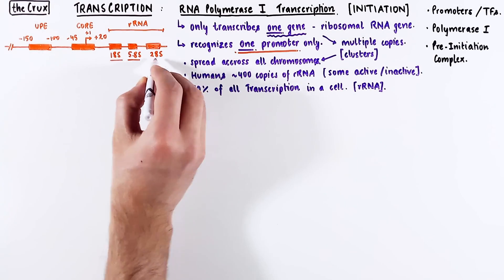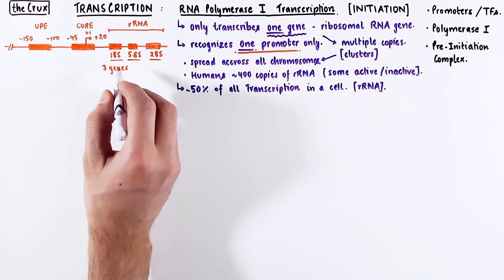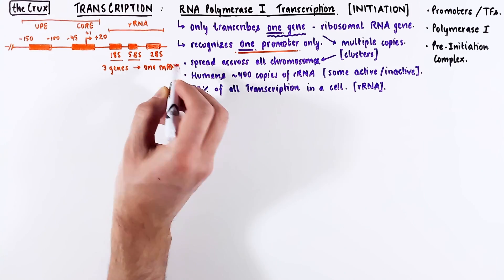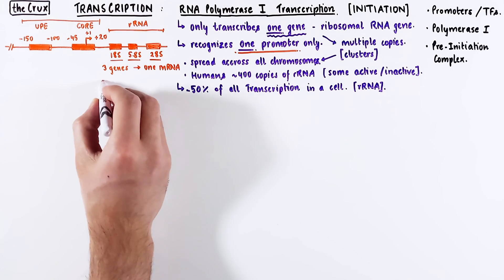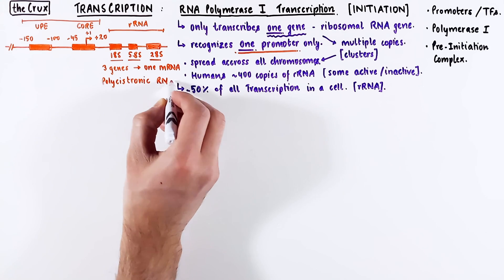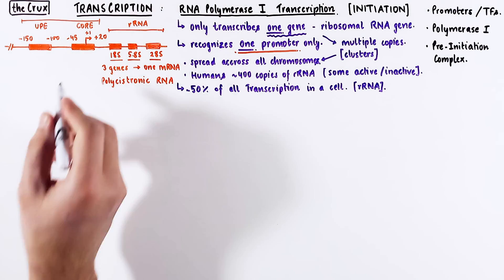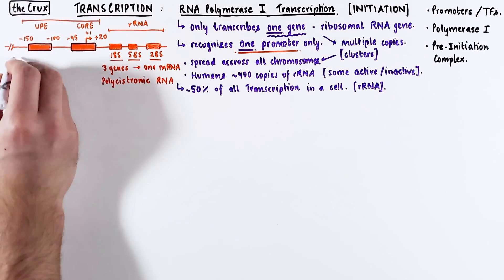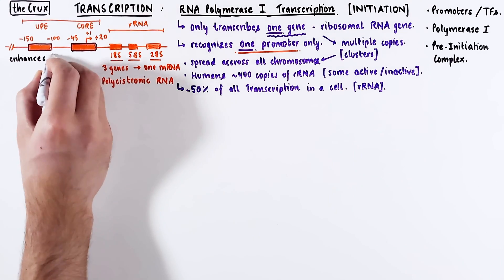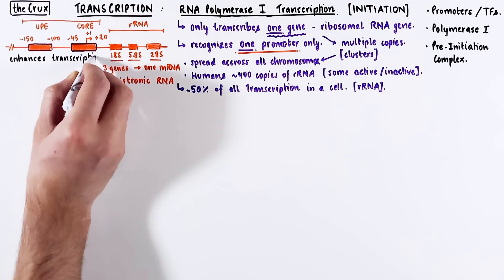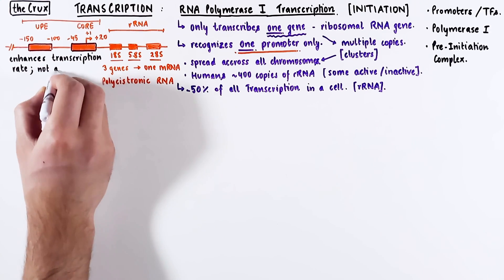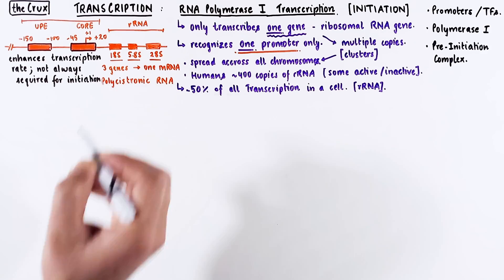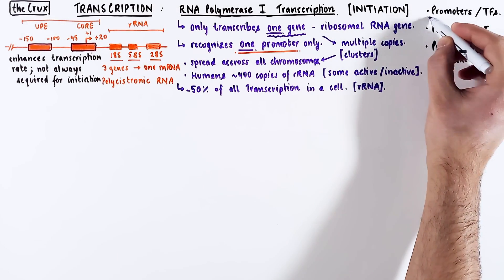Notice that there are three genes but only one promoter available, which means you can only produce one RNA. These types of RNAs where you have multiple products within the same RNA are called polycystronic RNA. Going back to the promoter, this core promoter is essential for transcription of the ribosomal RNA genes, but the upstream promoter is not always required. Its main job is to enhance the transcription rate. Sometimes ribosomal RNA genes actually do not have the UPE in their promoter.